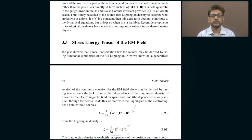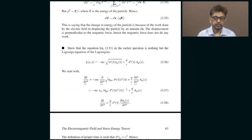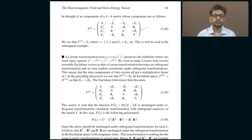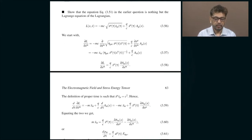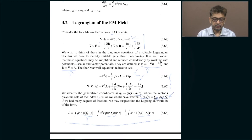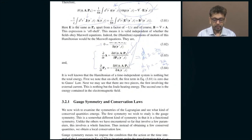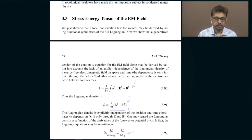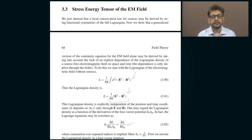In today's class I will be discussing the energy-momentum tensor, or the stress-energy tensor, of the electromagnetic field. Recall from the last class that there is a two-component object called a tensor which is a conserved quantity. It is an anti-symmetric tensor, meaning the diagonal elements are all zero and the off-diagonal elements are the three components of the electric and three components of the magnetic fields. I want to convince you that, consistent with Noether's theorem, there is a conserved quantity which is also a rank-2 tensor.